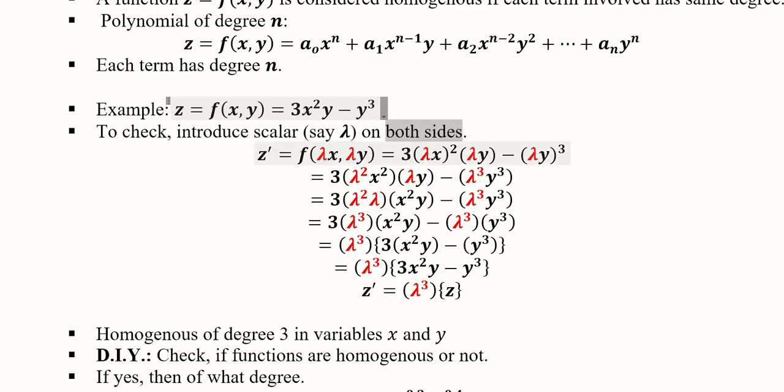So z' is now a new function because a scalar has been introduced in it. It's not the same function. We write the scalar lambda with both of the variables: z' = f(λx, λy). On the other side, wherever the variables are appearing, we are going to write lambda with them. With x we write lambda, with y and here again.